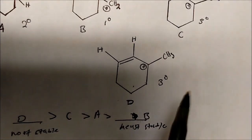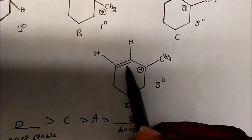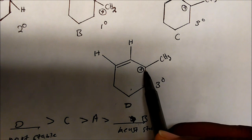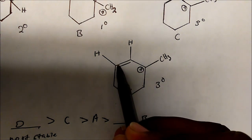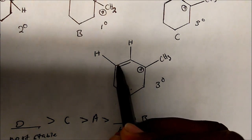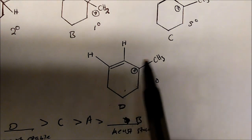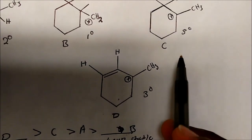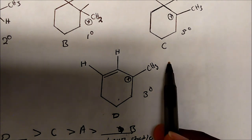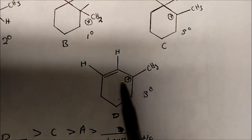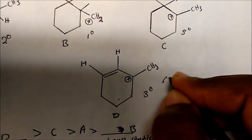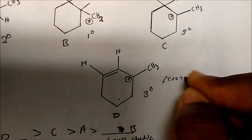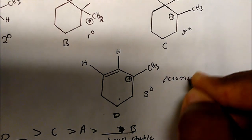The reason D is more stable than C — even though they're both tertiary carbocations — is because you can flip the double bond over and move the plus charge, meaning D can participate in resonance. That resonance stabilization is what makes D more stable than C, and that is very important.